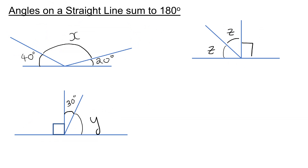Let's have a look at this first property: angles in a straight line add up to 180 degrees. In this first example, if I want to find angle X, I add up the two angles that I know, 40 and 20, which is 60. And I subtract that from 180, which gives me 180 take away 60, which is 120 degrees. So X is equal to 120 degrees.